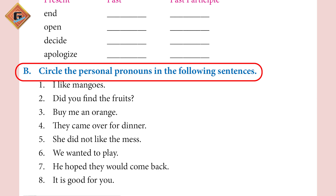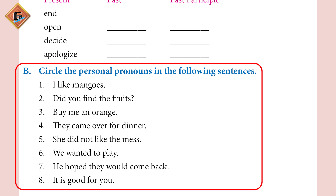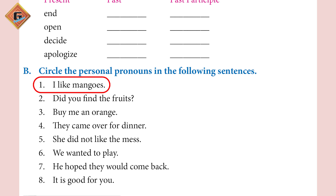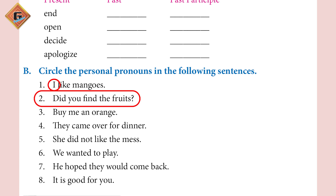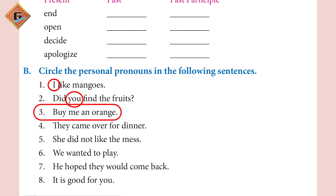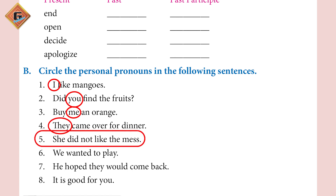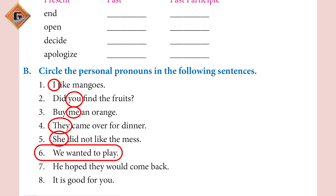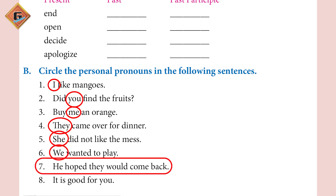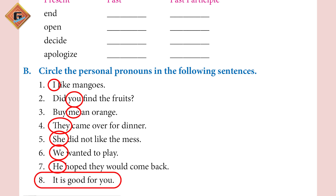Question B: Circle the personal pronouns in the following sentences. 1. I like mangoes — circle I. 2. Did you find the fruits? — circle you. 3. Buy me an orange — circle me. 4. They came over for dinner — circle they. 5. She did not like the mess — circle she. 6. We wanted to play — circle we. 7. He hoped they would come back — circle he. 8. It is good for you — circle you.